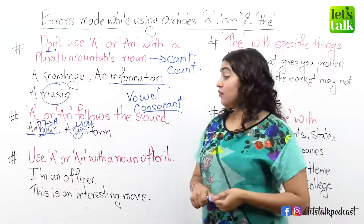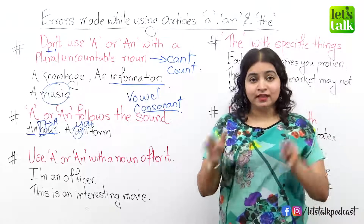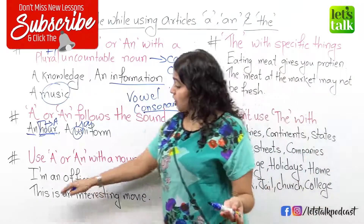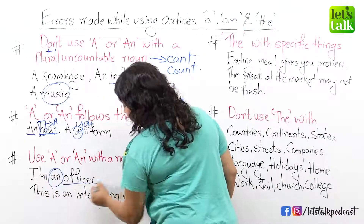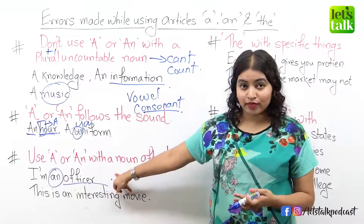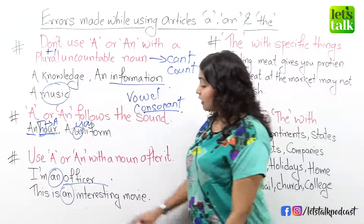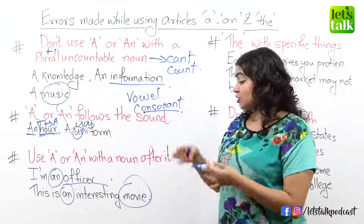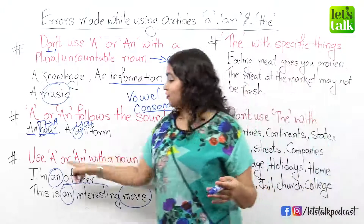Rule number three tells us that we can use a or an with a noun after it. So you can use a or an if it is followed by a noun. For example, "I am an officer" — officer is a noun, so you can use an before it. Similarly, you can say "this is an interesting movie" — you cannot say "this is an interesting" without a noun following. You have to follow up with a noun, whether it's an interesting movie or a boring movie.